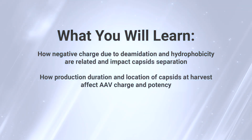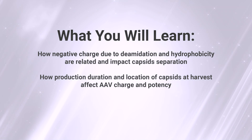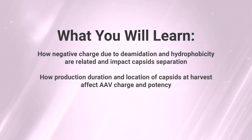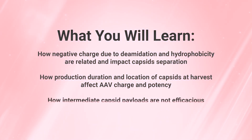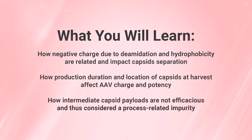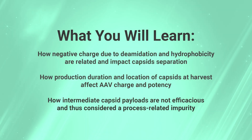How production duration and location of capsids at harvest affect AAV charge and potency, and how intermediate capsid payloads are not efficacious and thus considered a process-related impurity.